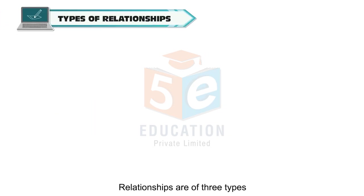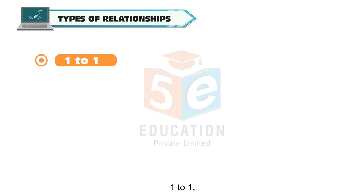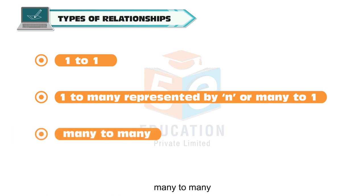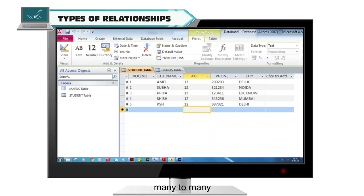Relationships are of three types: one to one, one to many (represented by N), or many to one, and many to many. Let us understand these relationships with an example.